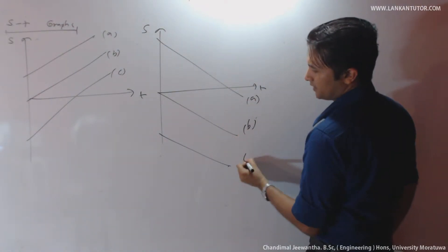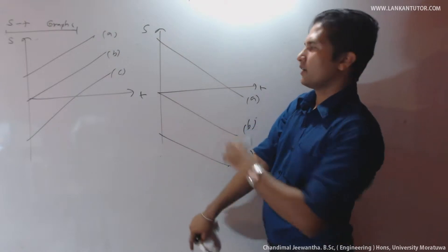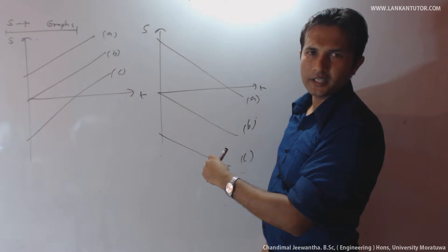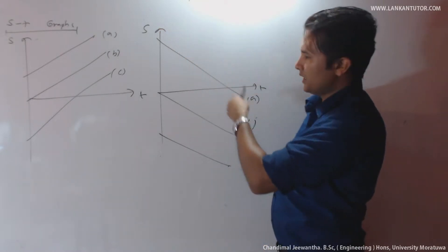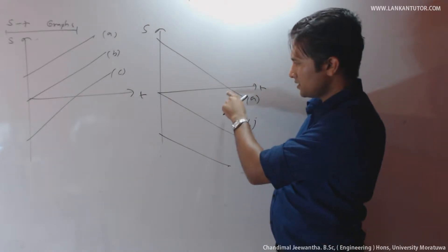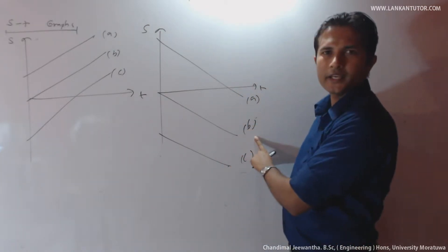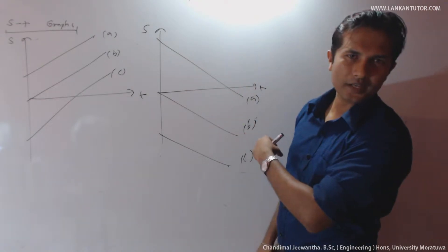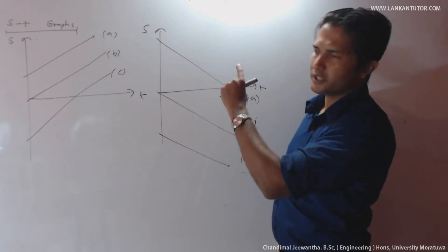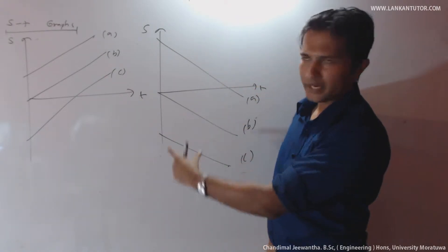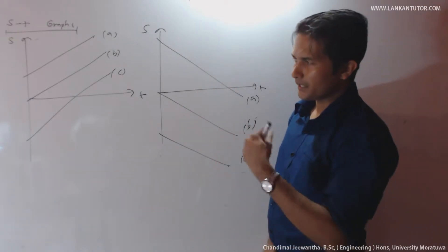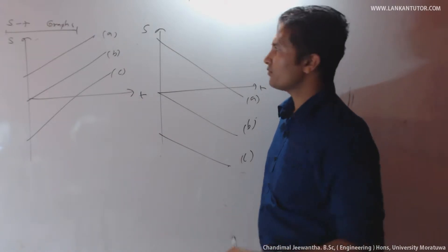Considering the next set — simple A: starts with positive displacement, moves towards the negative direction with uniform velocity, and it passes the origin as well. Considering B: object moves towards the negative direction across the origin. Considering simple C: object starts from negative displacement and moves further in the negative direction with uniform velocity.